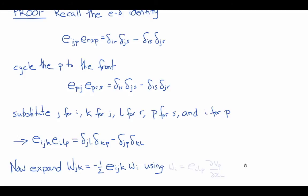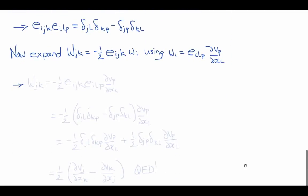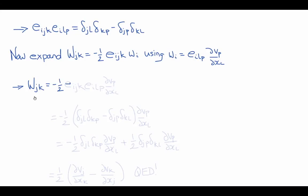So now we can use this version of the E-delta identity to expand our expression Wjk equals minus one-half Eijk little wi, using the definition of little wi as Eilp del vp del xl. So this will now become Wjk equals minus one-half Eijk times Eilp times del vp del xl. And now we'll use our E-delta identity, and this product will become minus one-half delta jl delta kp minus delta jp delta kl times del vp del xl.